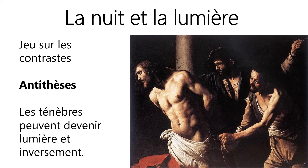Dans la peinture, le baroque met en scène le contraste entre l'ombre et la lumière. La technique du clair-obscur est souvent utilisée. Dans la littérature, pour souligner le contraste entre les ténèbres et la lumière, les écrivains ont recours à l'antithèse. Dans le monde vu par les artistes baroques, les ténèbres peuvent devenir lumière et inversement.